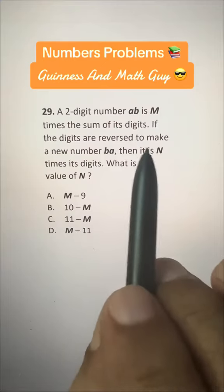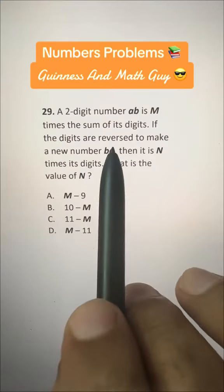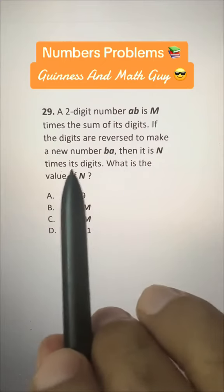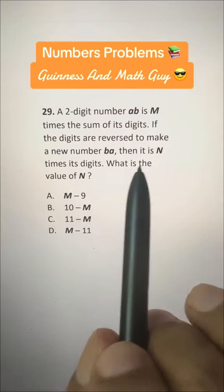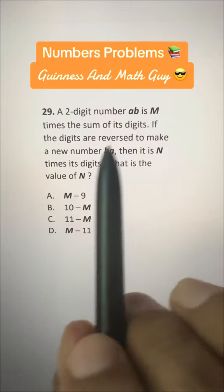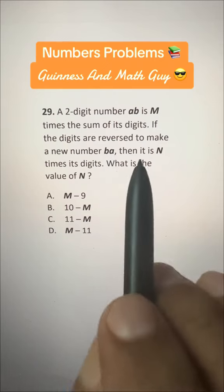A two-digit number AB is M times the sum of its digits. If the digits are reversed to make a new number BA, then it is N times its digits. What is the value of N? It seems a little difficult question. It is not.